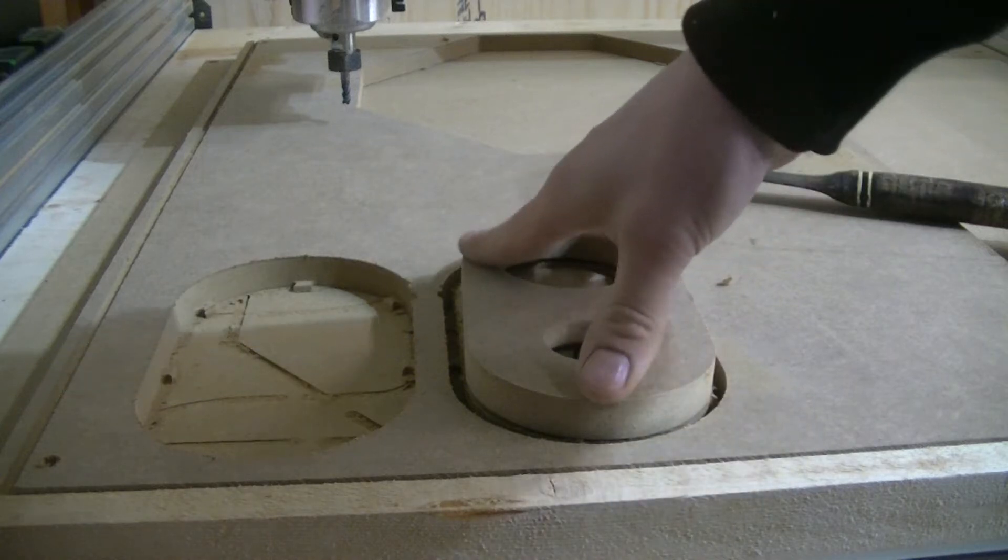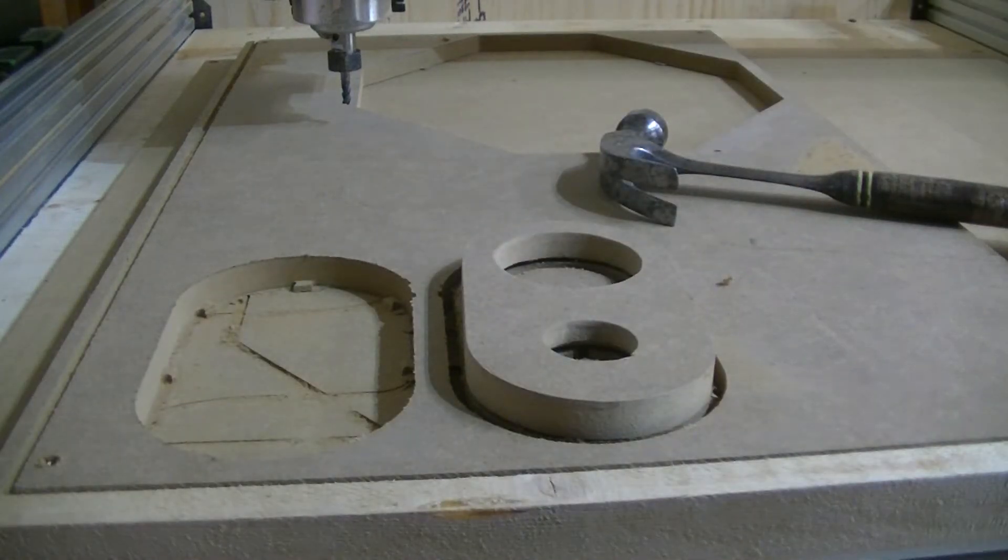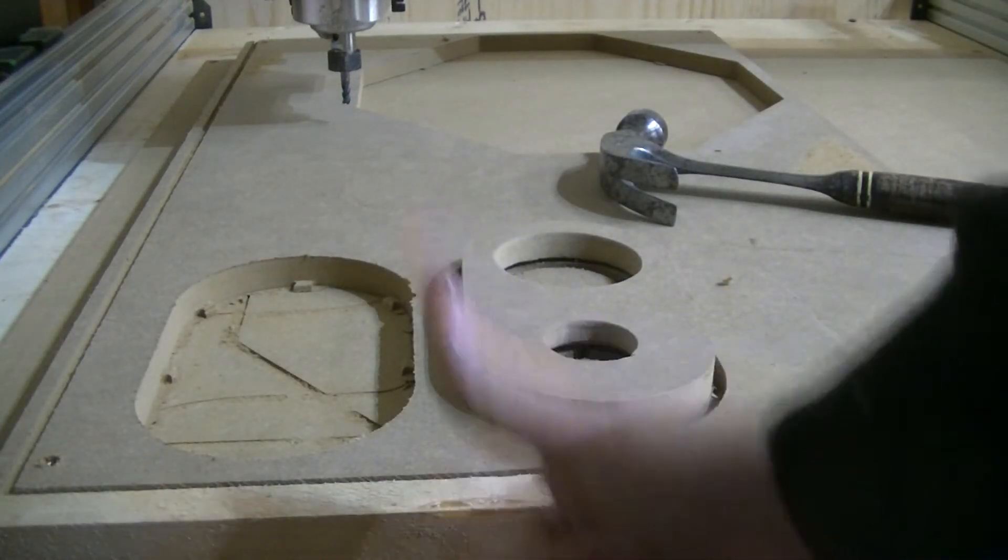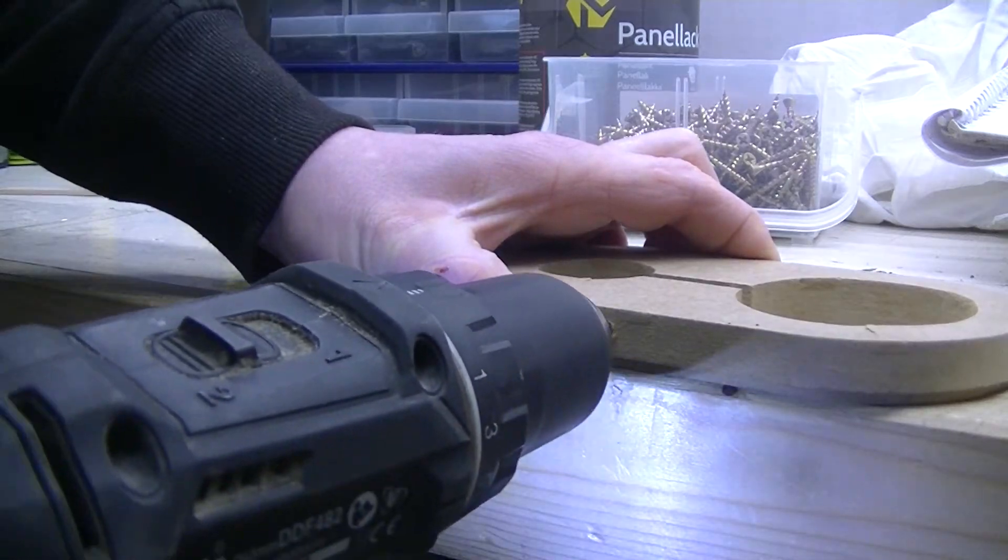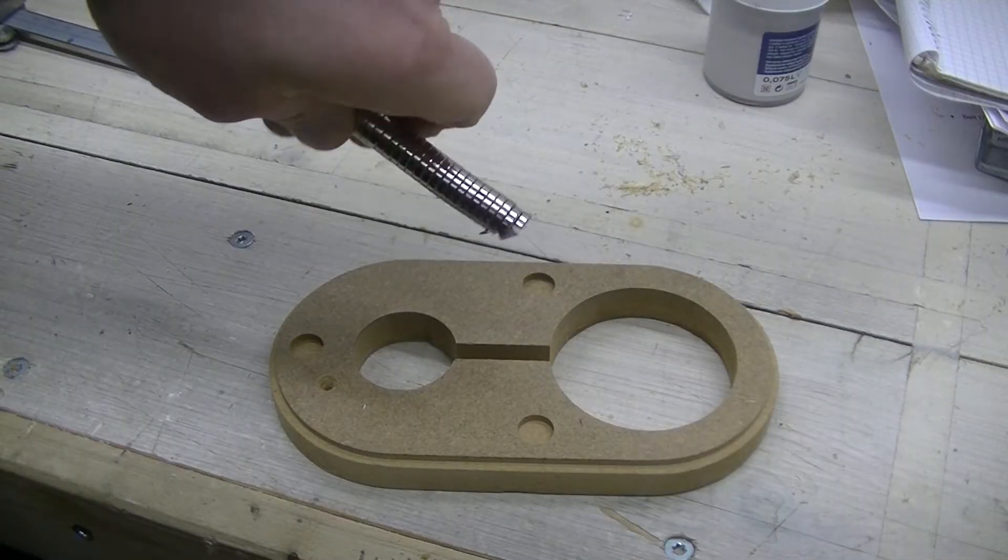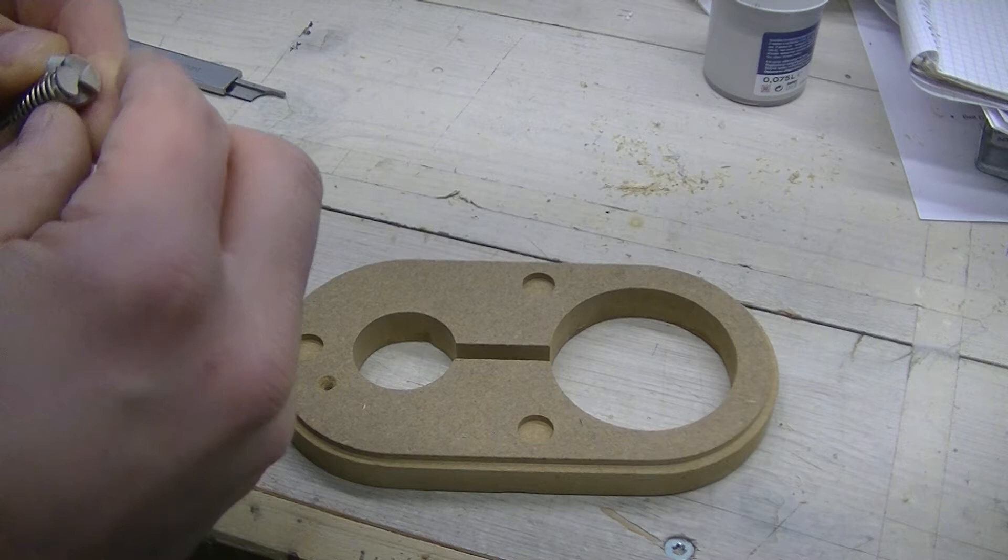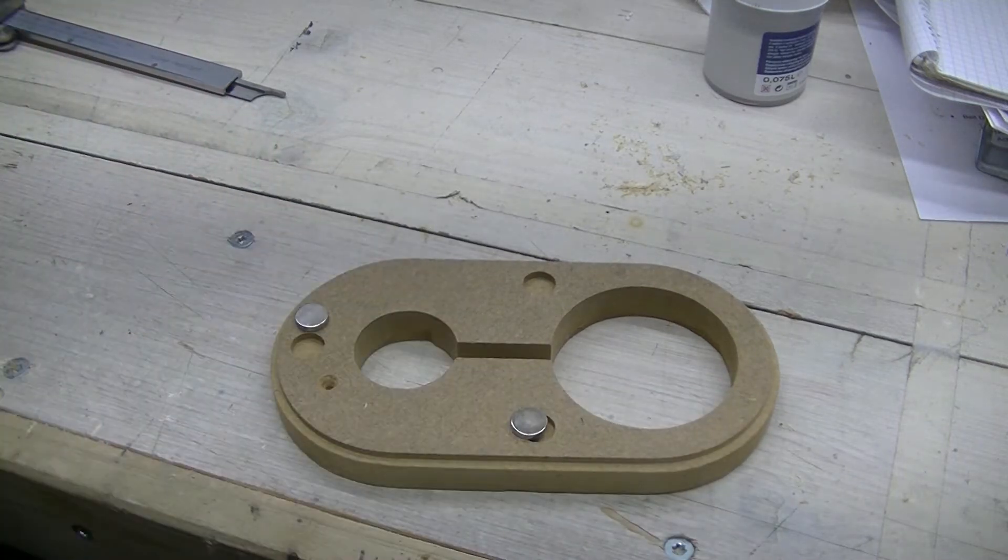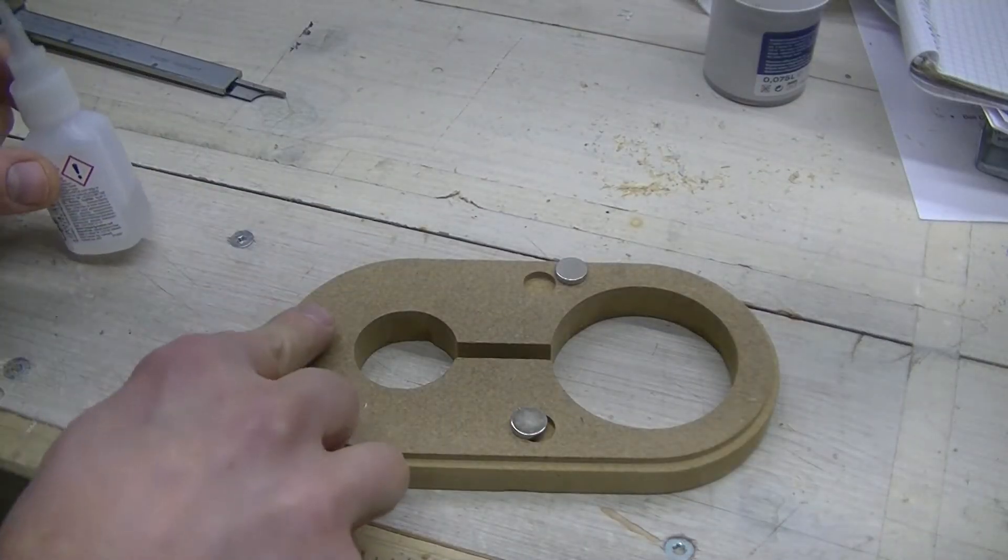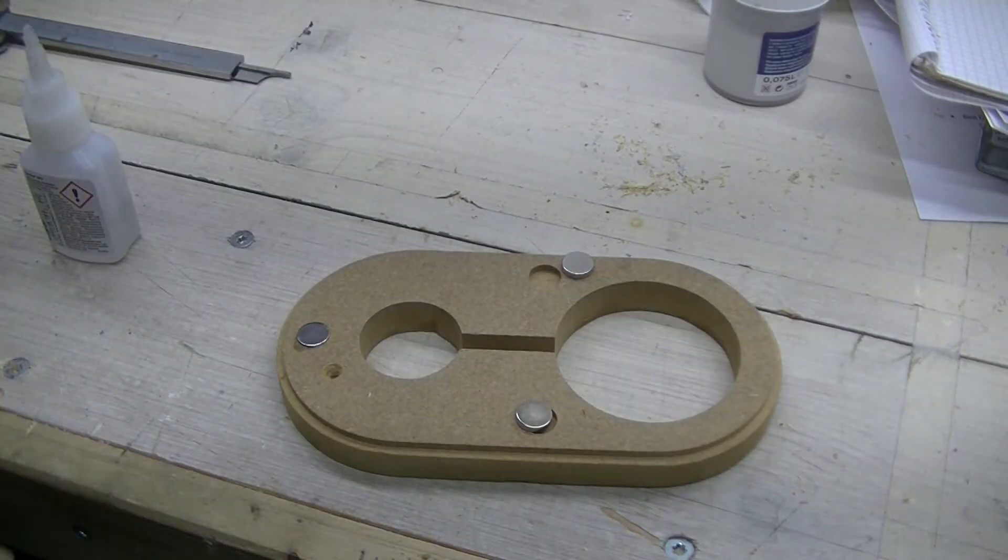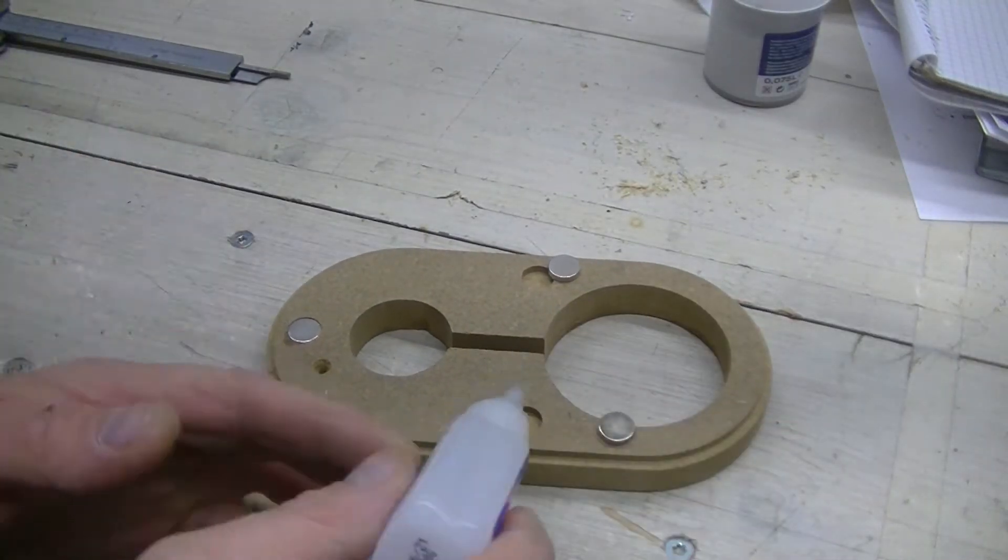And the pieces fit like a glove. Now, the top piece here is the actual dust shoe part, and the piece you see here is the piece clamped to the router. So I added a hole for a screw to clamp it to the router, and here I added some magnets to keep the two pieces together. Just some cyanoacrylate glue and then press them in place, or hammer them in place.